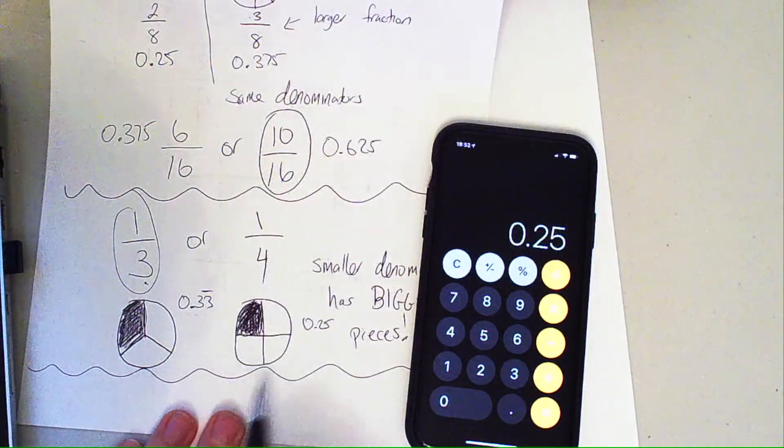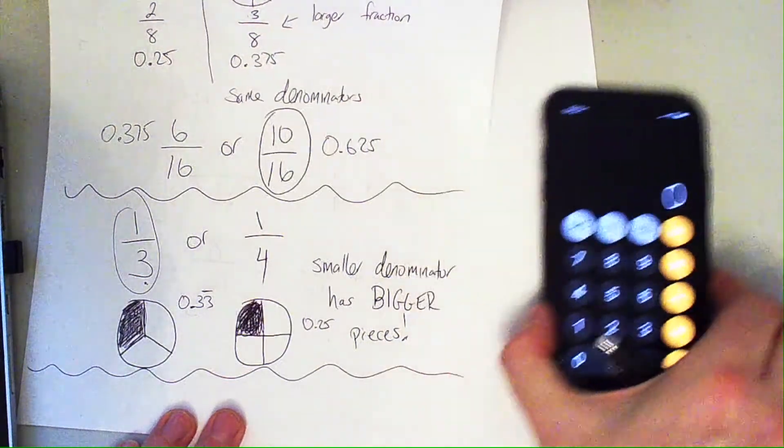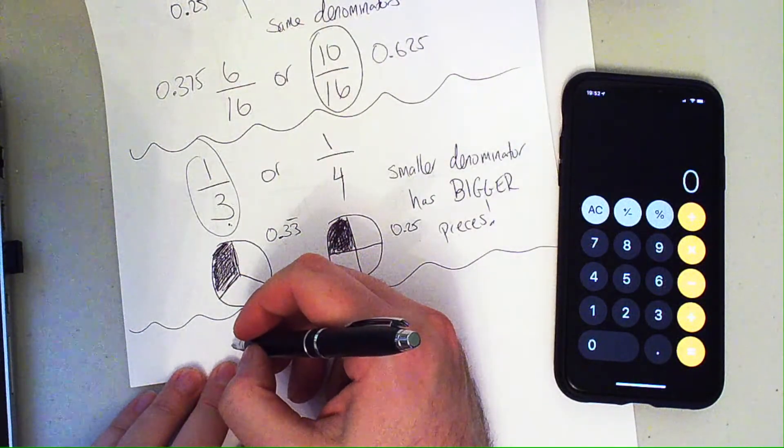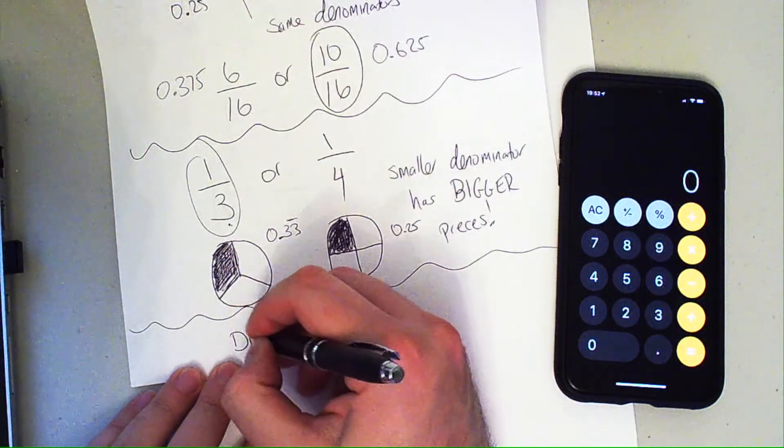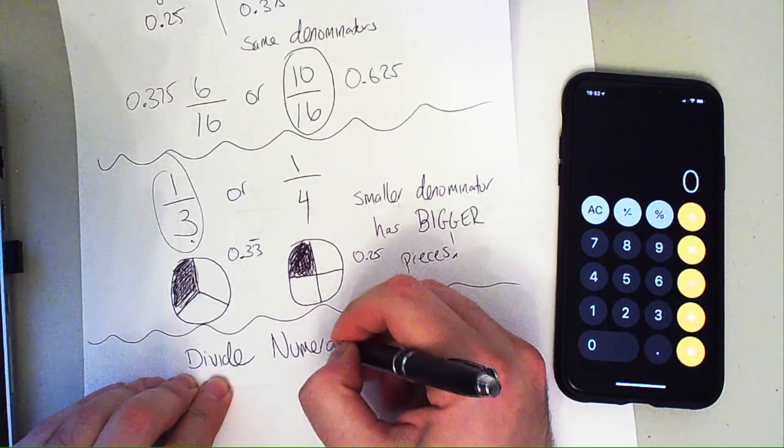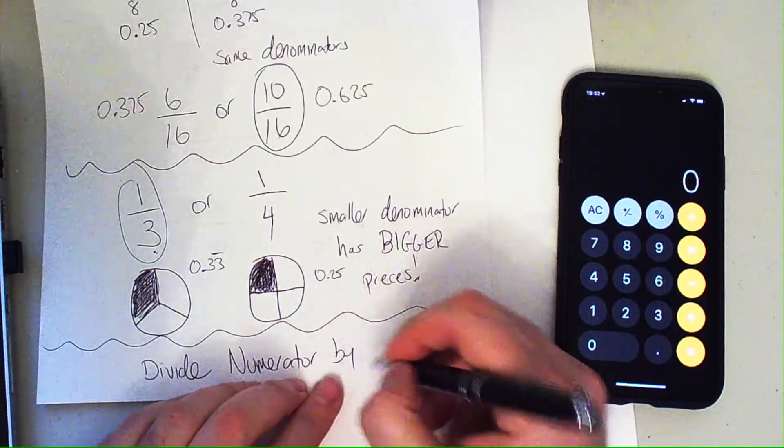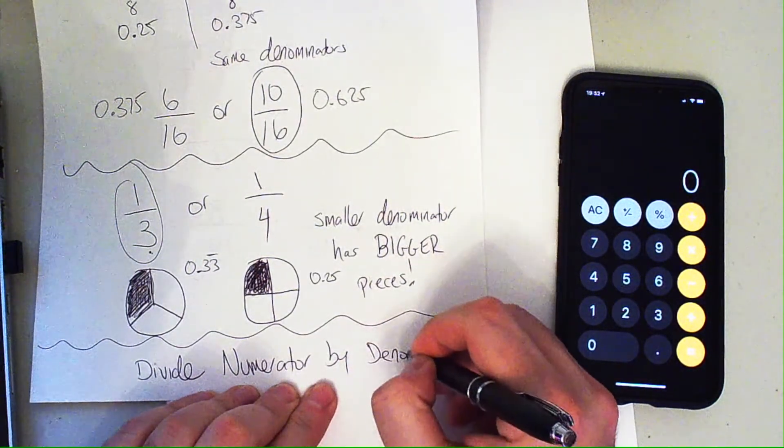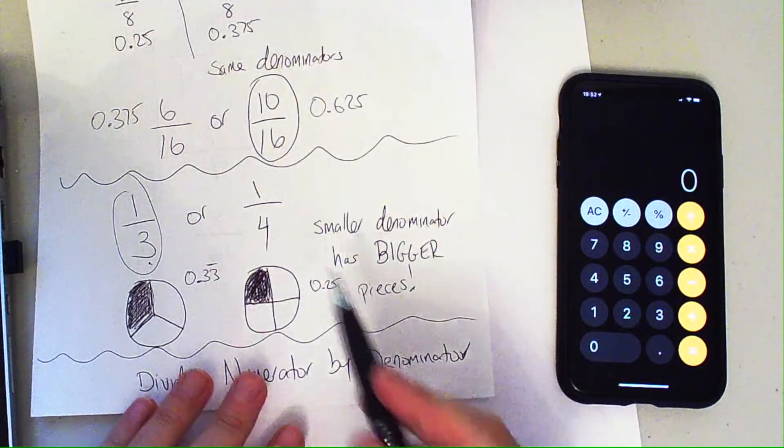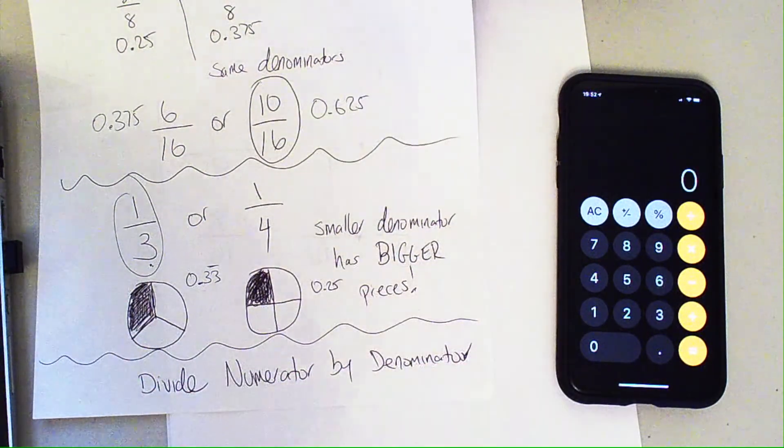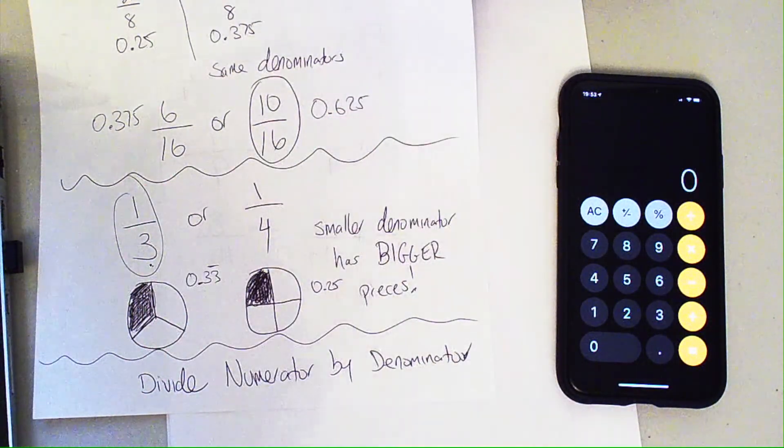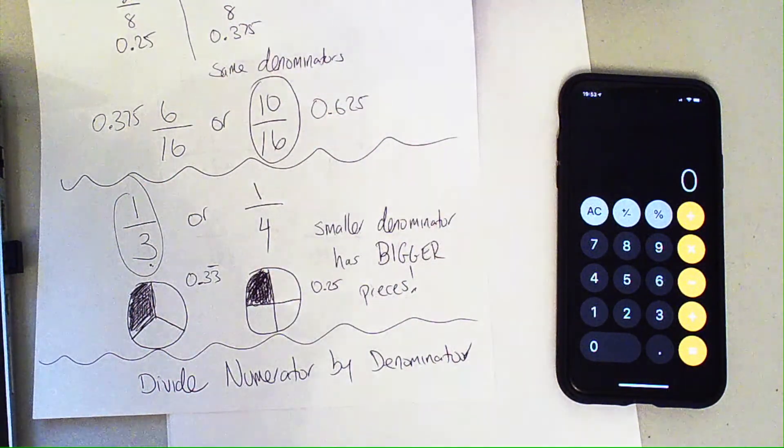So to calculate the larger fraction using a calculator, divide numerator by denominator. And you may have noticed that fractions is basically division: 1 divide by 4, 1 divide by 3. So you will get more evidence of this as we go along.